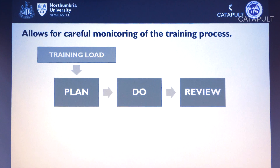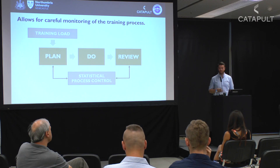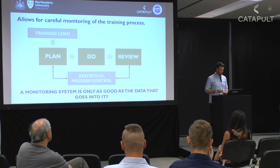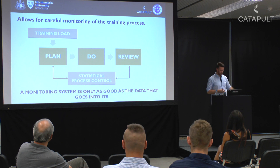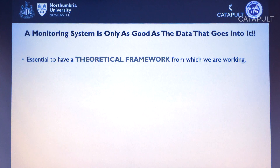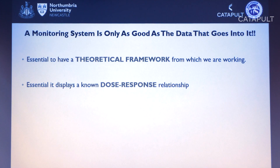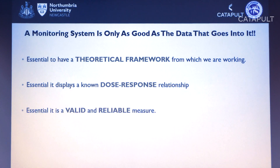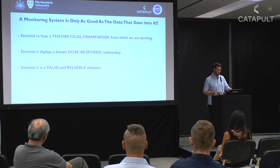I call this the monitoring process. You always start with your measure of training load, which feeds into your training plan. You conduct training, then review it — and that's where statistical process control fits into both the planning and review phases. The data going into the monitoring system is only as good as the data input. You need a theoretical framework, which for me is the dose-response relationship: we have to understand that if we plan a certain load, what are the typical responses going to be? And the measure must always be valid and reliable.